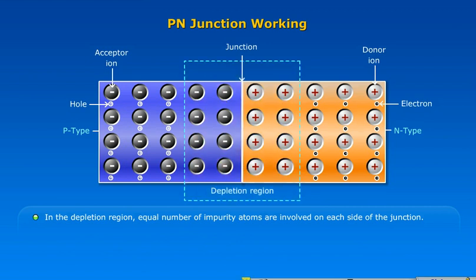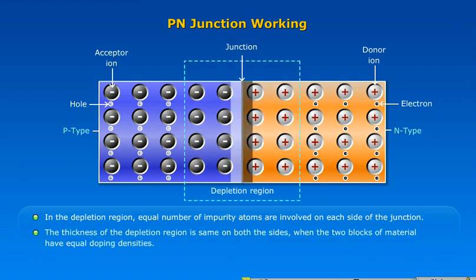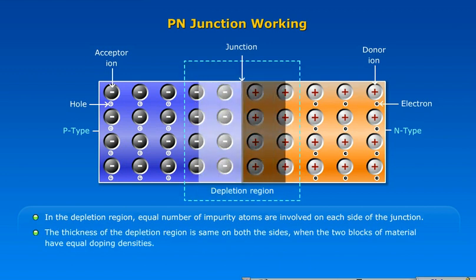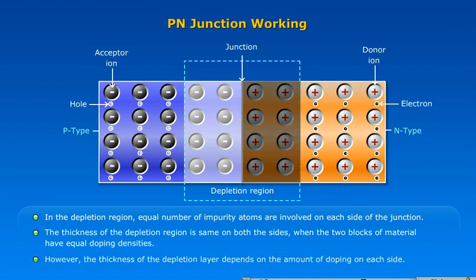In the depletion region, an equal number of impurity atoms is involved on each side of the junction. The thickness of the depletion region is the same on both sides when the two blocks of material have equal doping densities. However, the thickness of the depletion layer depends on the amount of doping on each side.